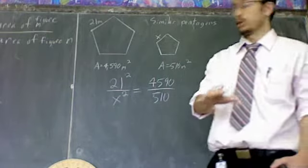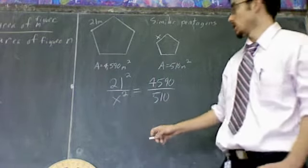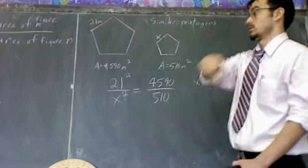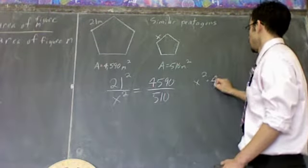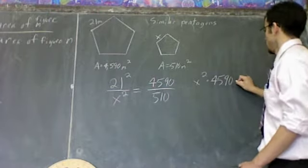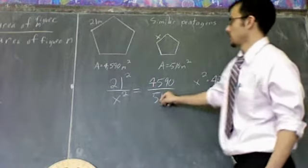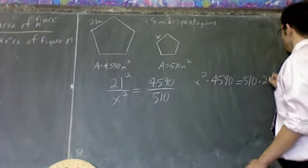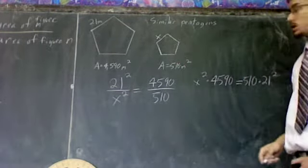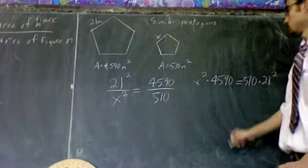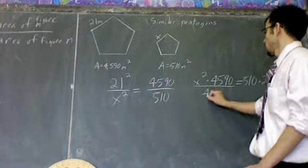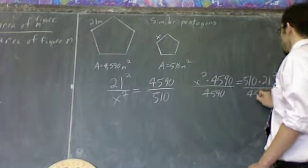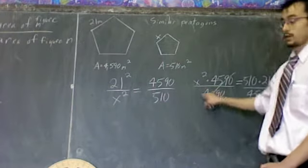So what we're doing is we are going to cross-multiply one more time. X squared times 4,590 equals 510 times 21 squared. And this is pretty easy to solve. Divide by the 4,590.